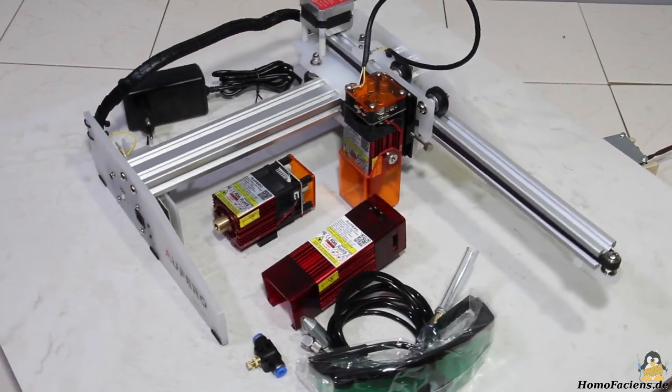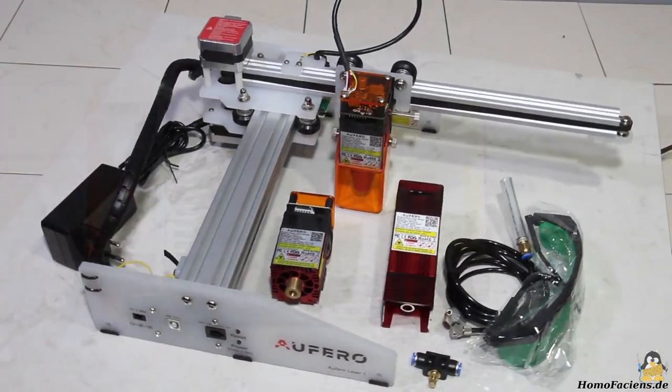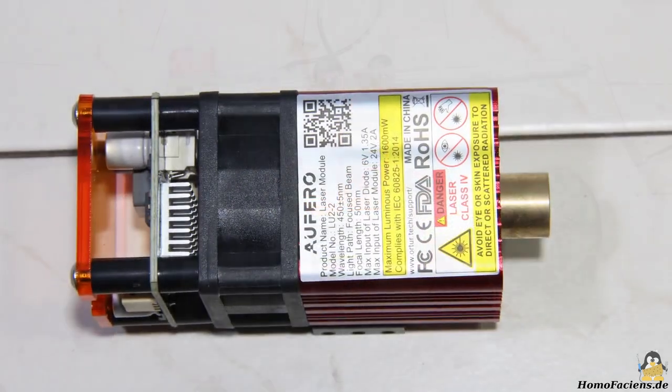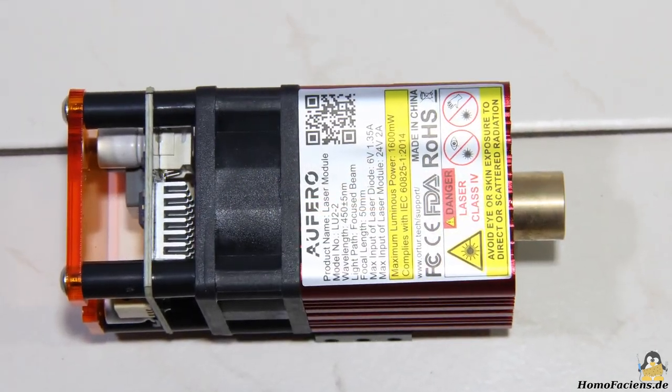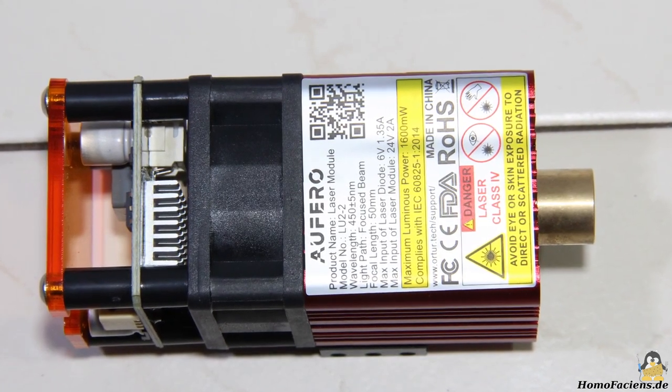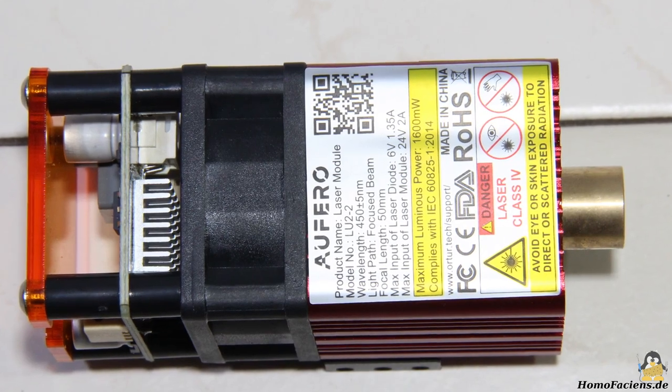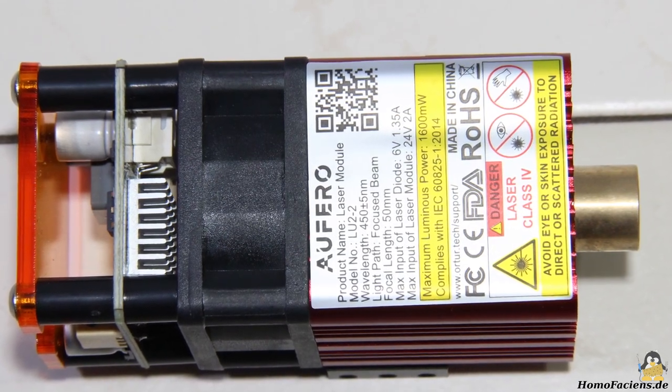Ortur offers three different laser modules and my package included all three types. The cheapest module named LU-2-2 has a laser diode with a focal length of 50mm and an input power of about 8W, delivering a laser output power of 1.6W.